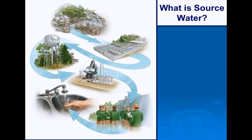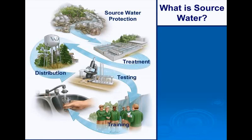Protecting our drinking water is not a one-step process. This figure illustrates Ontario's multi-barrier approach to protecting municipal drinking water from source to tap. Source water protection is the first step, followed by effective water treatment, distribution, testing, and training, before the water reaches your tap. By ensuring that proper protection is in place at each stage of this process, the likelihood of water contamination is reduced.